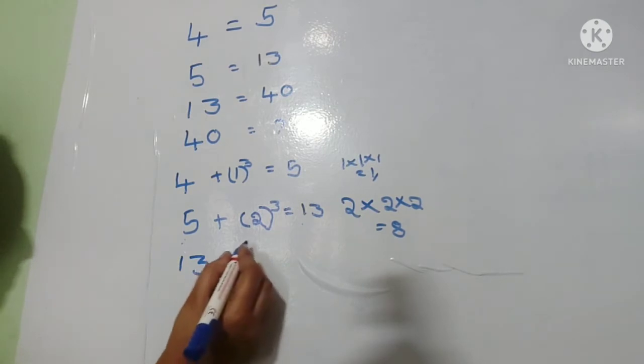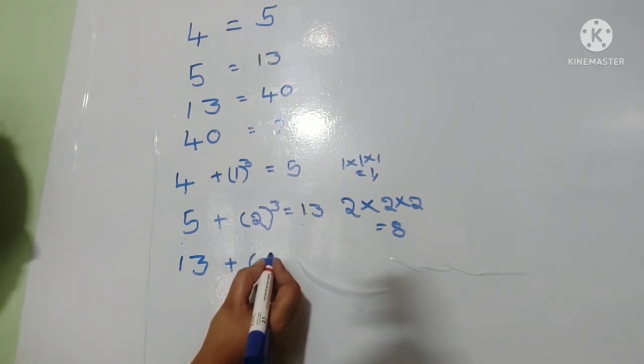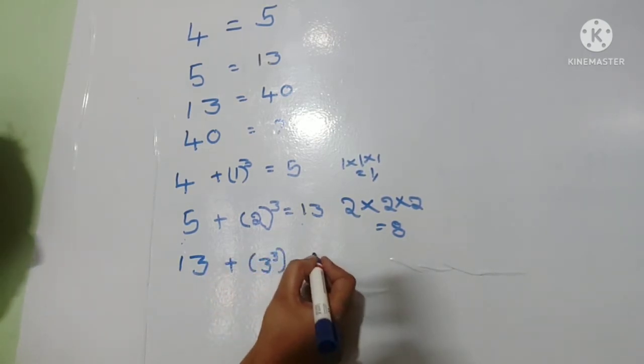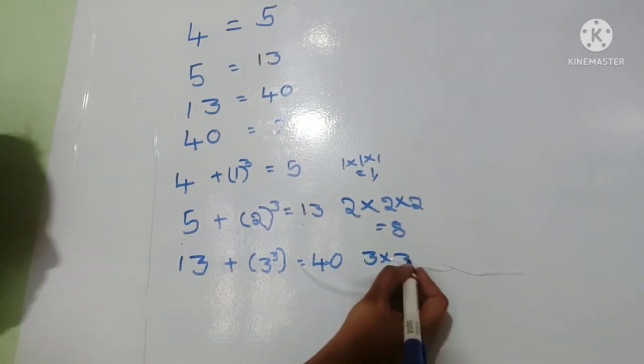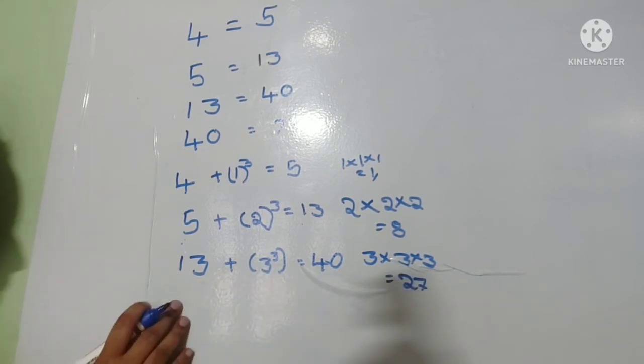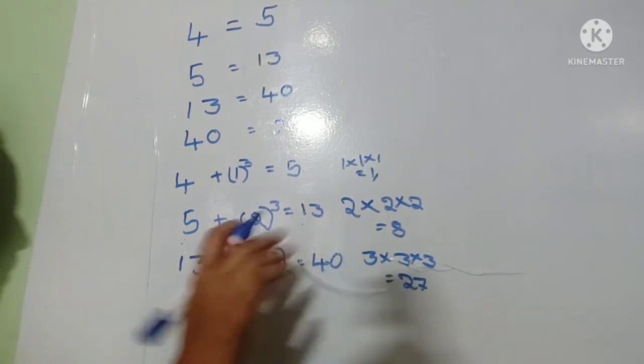Plus 3 cube equals forty. Three cube means three into three into three, we get twenty-seven. Twenty-seven plus thirteen equals forty.